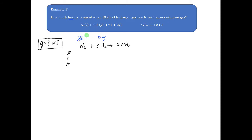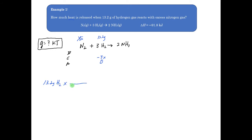In the future this could be a limiting reactant problem if both nitrogen and hydrogen amounts were given. For now, we know we're starting with a certain amount of hydrogen — it's going to go down by 3x and run out, and that's what we want to know. We want to know how much heat is released when all the hydrogen runs out. My first step is to convert the mass of hydrogen — 13.2 grams — using the molar mass of hydrogen.